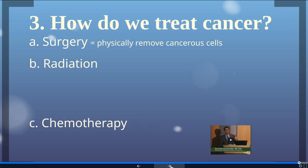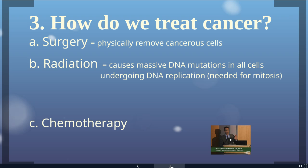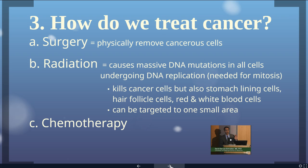If the cancer has spread through the body, or is located in parts of an organ that can't be dissected out, we use radiation and chemotherapy. Radiation causes massive DNA mutations in all cells undergoing DNA replication during S phase, essentially scrambling the DNA during copying so that the cell can't survive. This kills all cancer cells, but it also kills every other cell in your body going through mitosis. Side effects like nausea and hair loss are related to killing off all these rapidly reproducing cells.